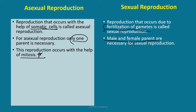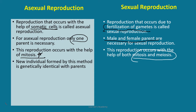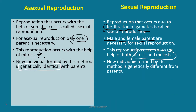In case of sexual reproduction, this reproduction occurs with the help of mitosis as well as meiosis. The next point for asexual reproduction is that the new individual formed by this method is genetically identical with parents, whereas in case of sexual reproduction, the new individual formed is genetically different because crossing over takes place during meiosis.